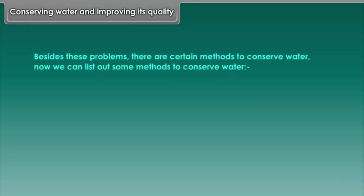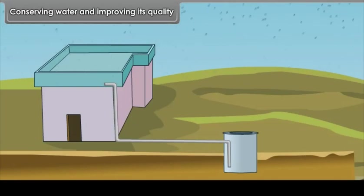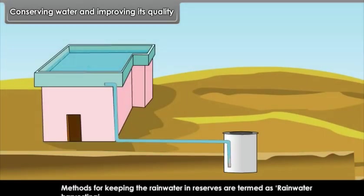Besides these problems, there are certain methods to conserve water. Now, we can list out some methods to conserve water. Rainwater harvesting. Methods for keeping the rainwater in reserves are termed as rainwater harvesting.